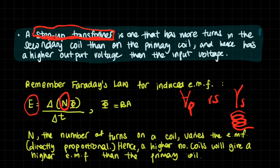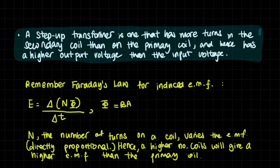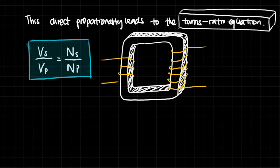Recalling Faraday's law for induced EMF: if you increase the number of turns you also increase the induced EMF. Also remember that phi equals magnetic flux, which equals magnetic flux density times the area perpendicular to the flux lines. The number of turns N varies with EMF and is directly proportional to it, so a higher number of turns gives a higher electromotive force than the primary coil.